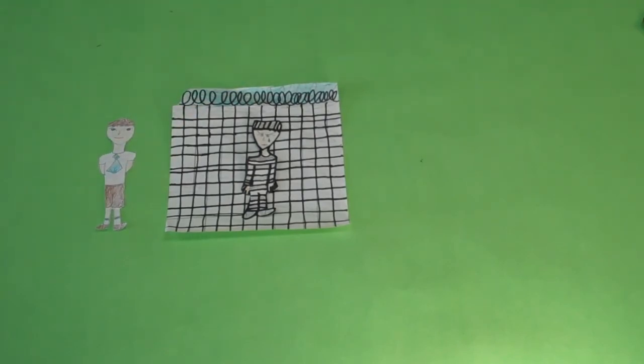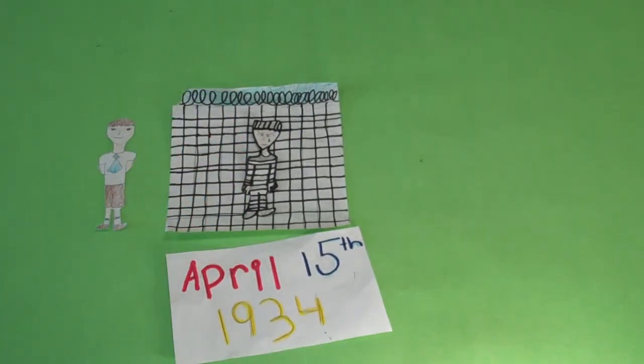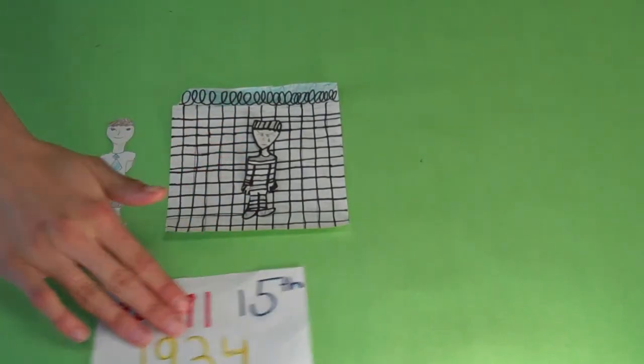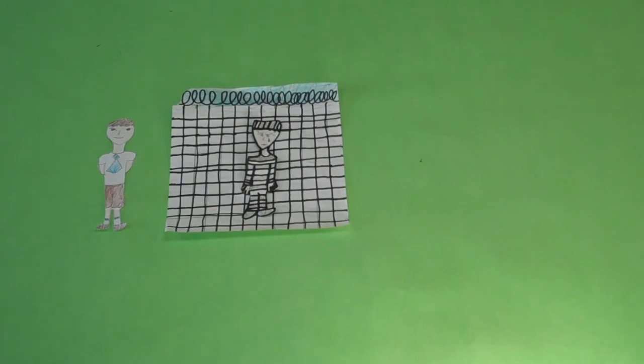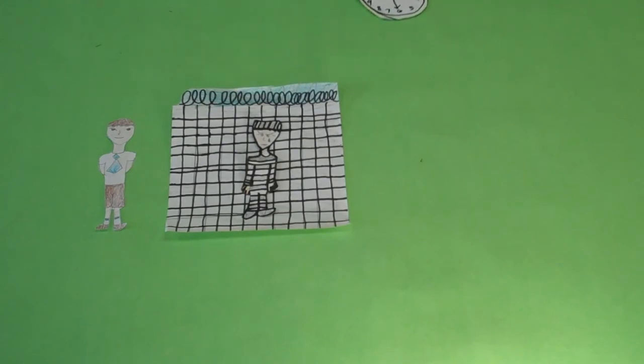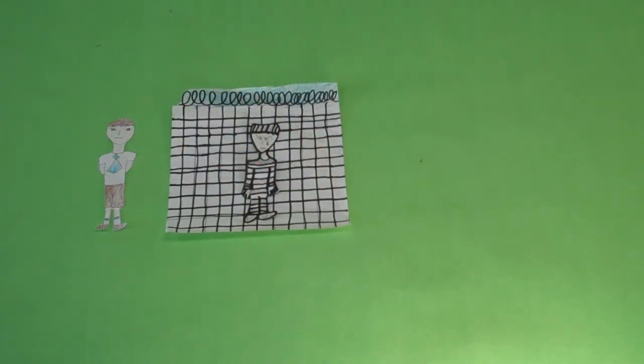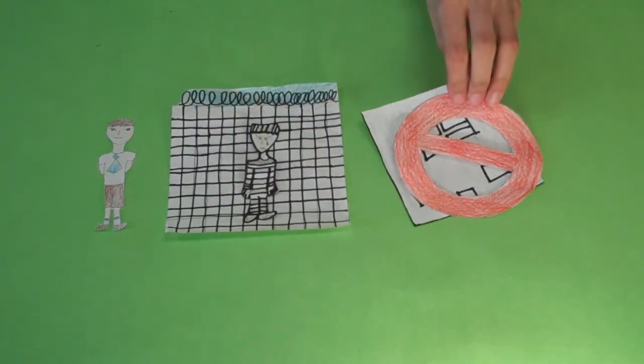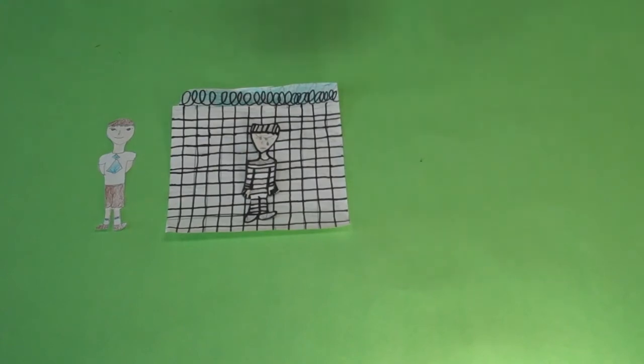Every day after that, Bruno would make his way to the place of the fence and he and Shmuel would talk for hours on end. The two find out that they were born on the same day, April 15, 1934. The two talk about everything. Shmuel tells Bruno about his previous life in Poland with his father, who was a watchmaker, and also about how awful the camp is. Bruno tells Shmuel all about his family and how he hates Outwith. They grow very close.